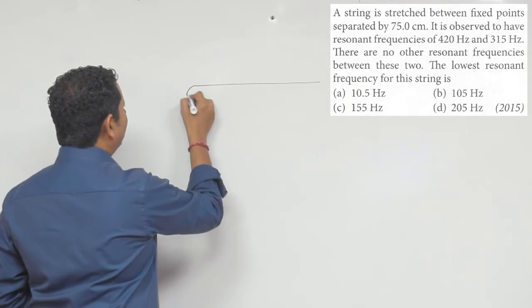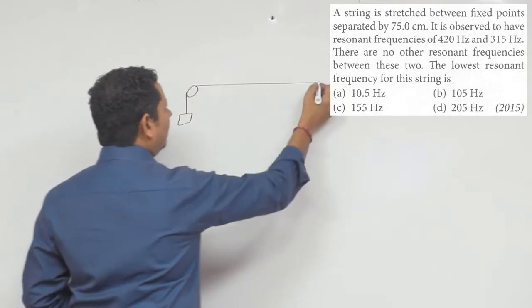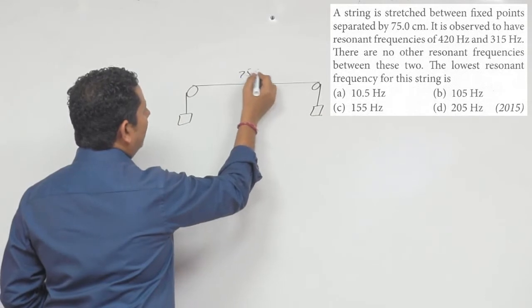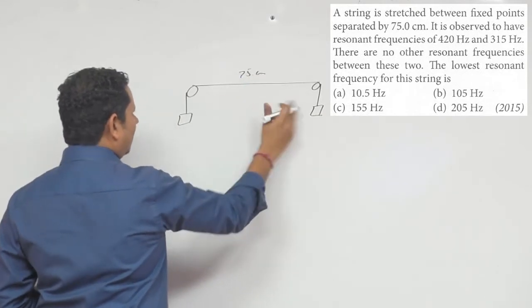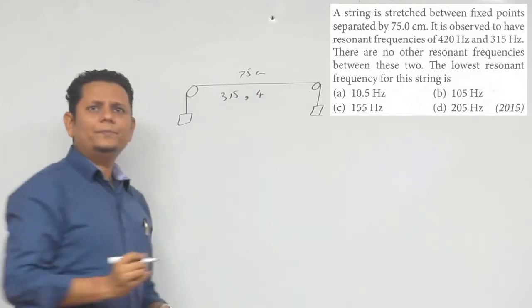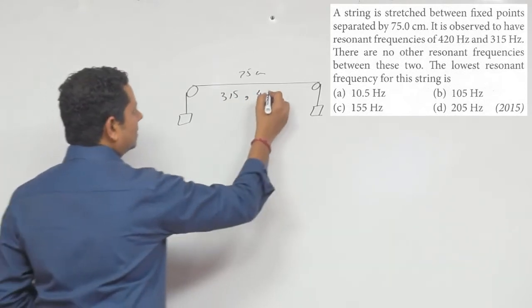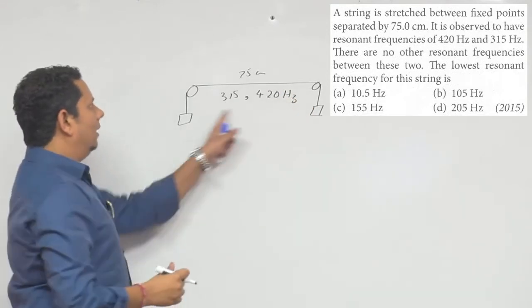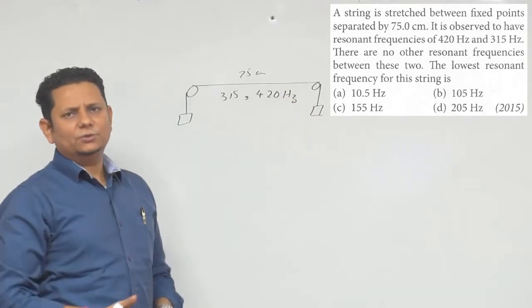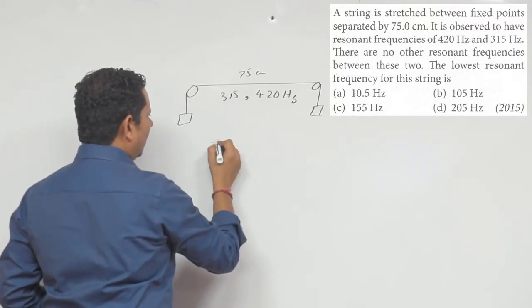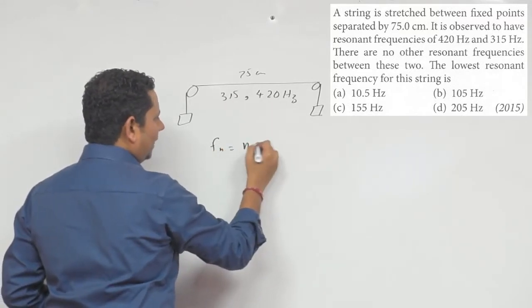The string is fixed at both ends, and these two resonant frequencies are next to each other. For a string fixed at both ends, you can find the resonant frequency as n times v divided by 2L.